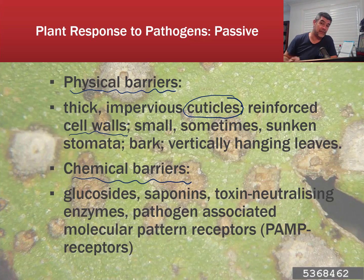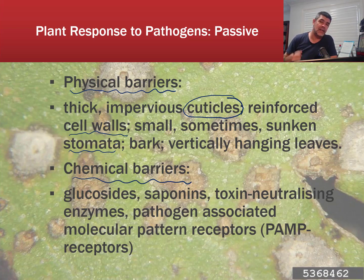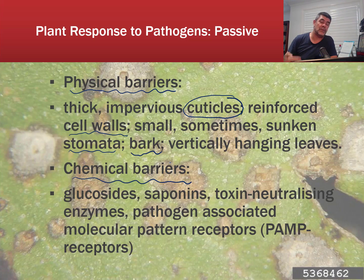Some types of cell walls have been reinforced to increase their strength, and the cell wall sits outside of the cell membrane, providing an extra level of protection between the outside of the plant and the internal structure of the cells. Sunken stomata, which we've talked about in terms of minimizing water loss, also play a role in minimizing infection from pathogens. Bark itself is often non-living tissue that is hard and a more difficult surface for pathogens to take hold. Even vertically hanging leaves help, as rain washes anything on the leaf surfaces away.